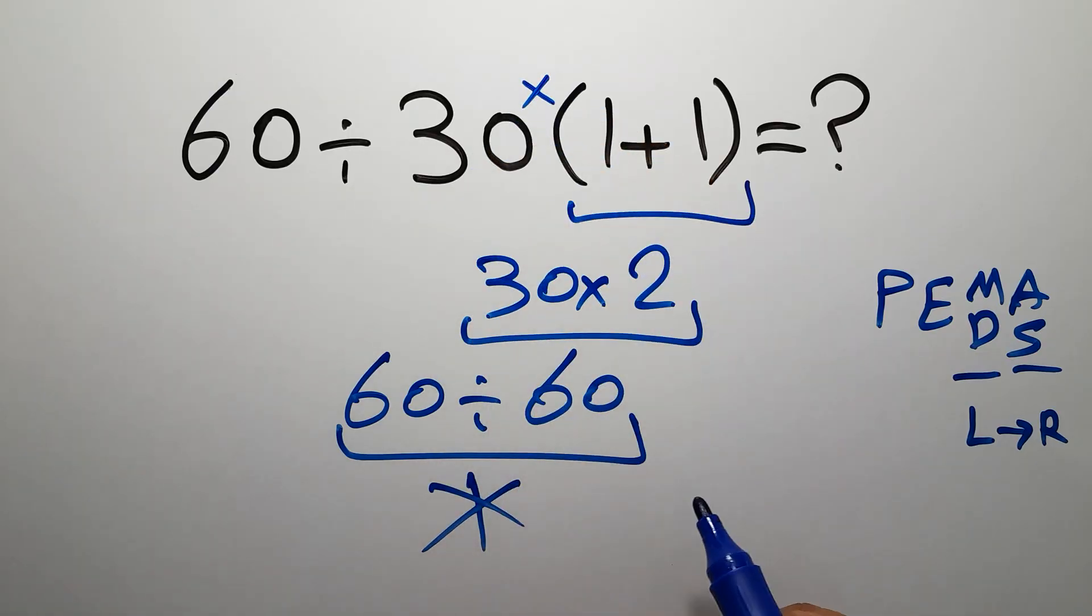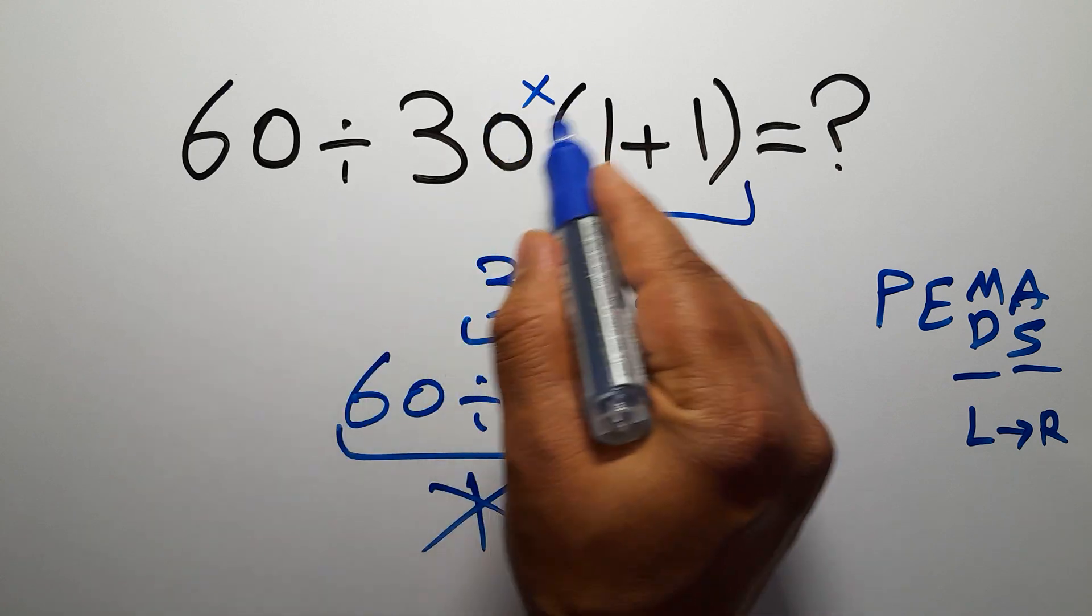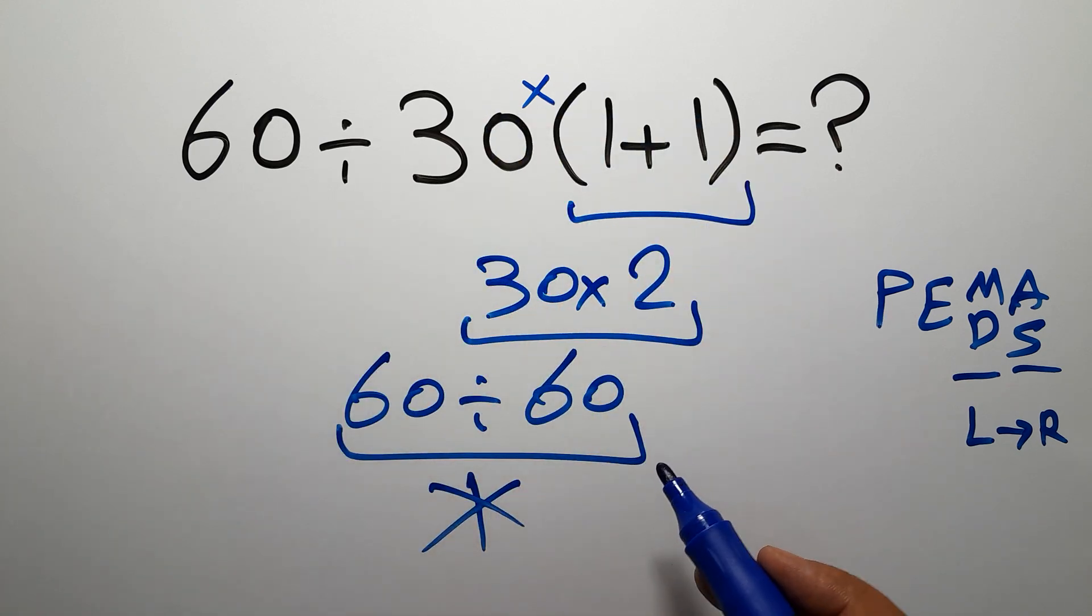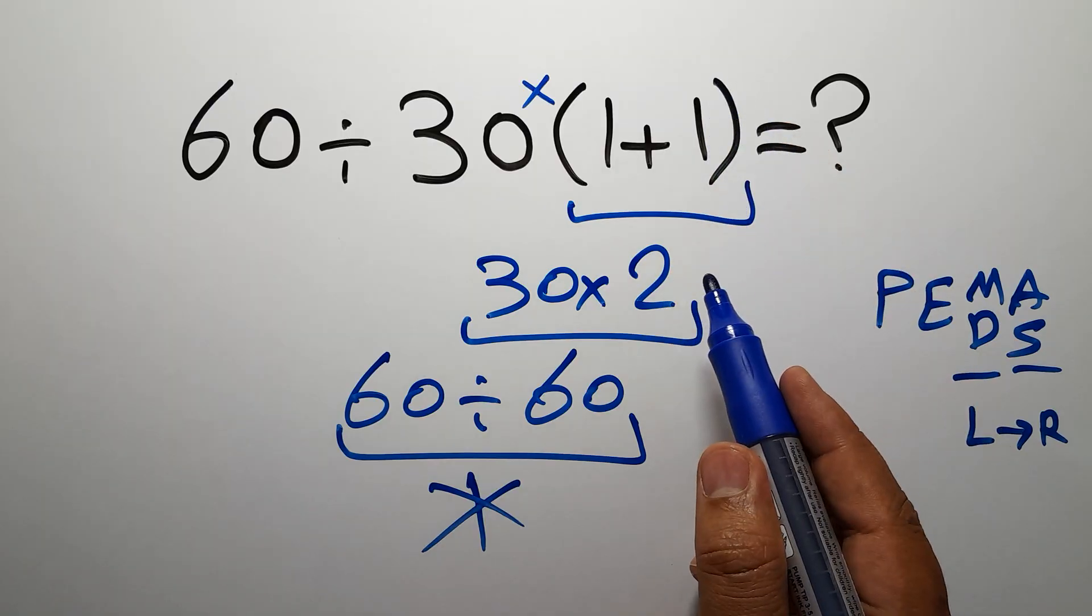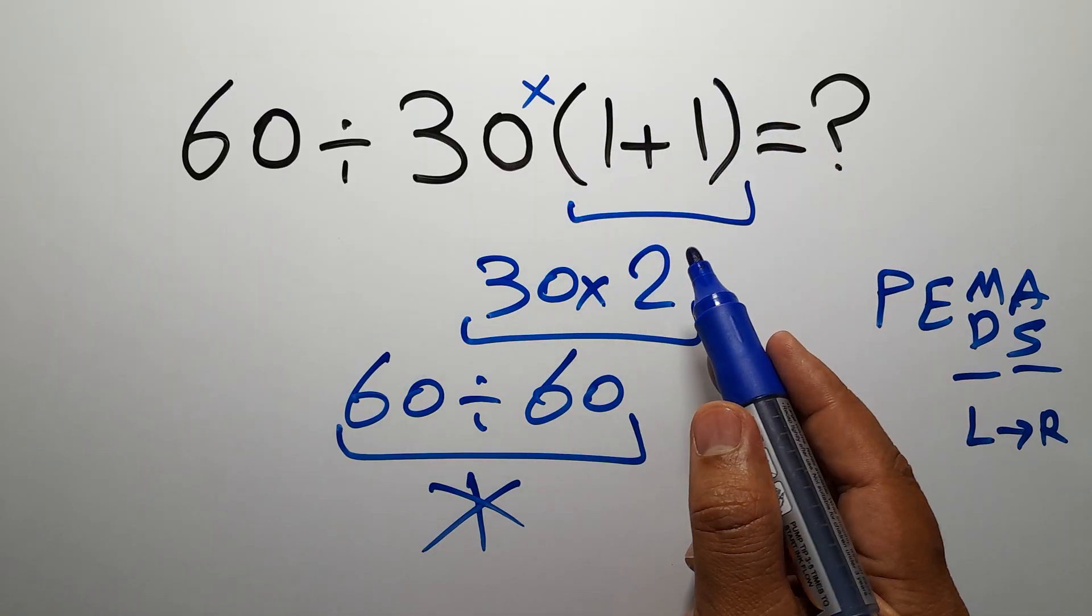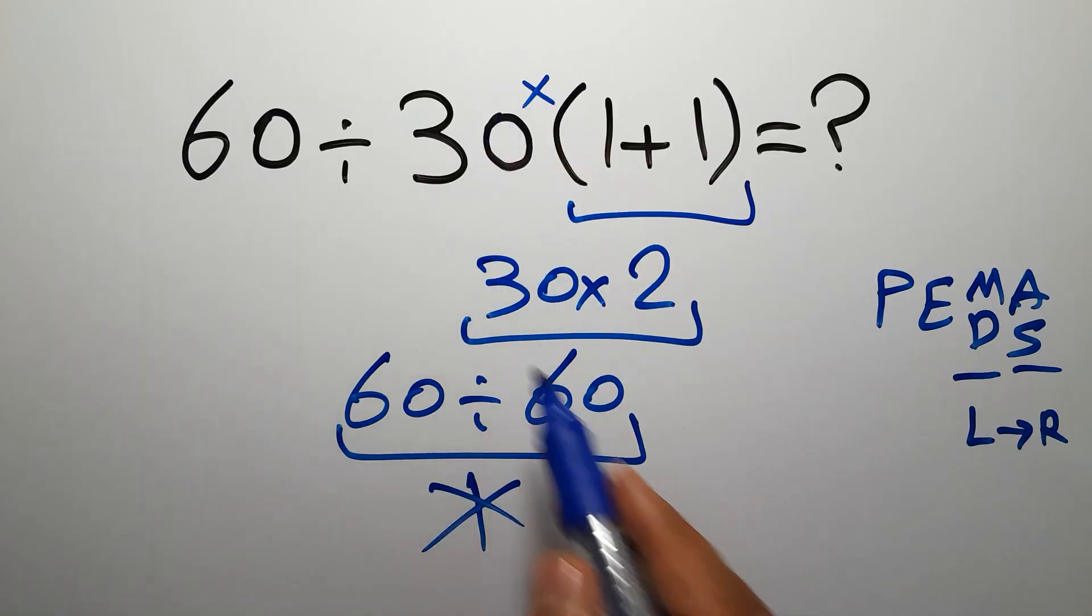So here we have a multiplication. In this expression we have one division, one multiplication, and one parentheses. According to PEMDAS, first we have to do these parentheses, and after these parentheses we have to do this division, not this multiplication.